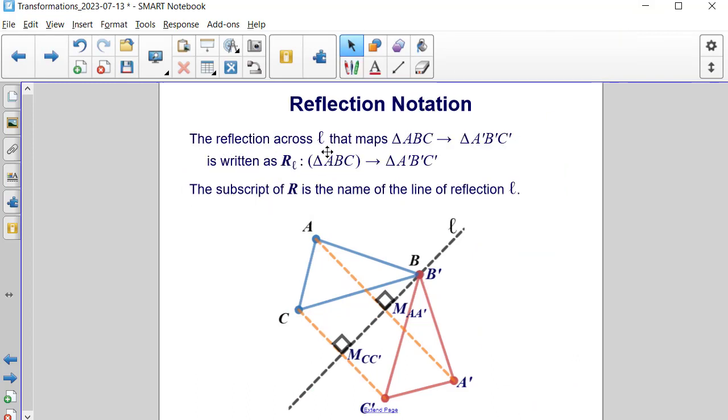The reflection across line L that maps triangle ABC to triangle A prime B prime C prime is written as capital R for reflection across line L of triangle ABC gives us triangle A prime B prime C prime. The subscript of our capital R for reflection is the name of the line of reflection, which in our case is line L.